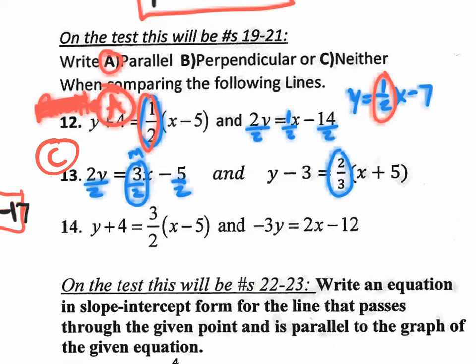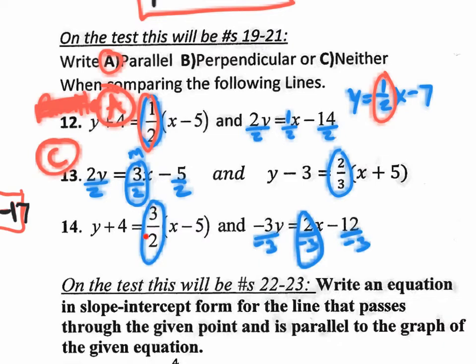For the last one, the slope is 3/2. Divide by -3 to get the second equation's slope, which is -2/3. That is the opposite reciprocal of 3/2 — it changes sign and flips — so this one is perpendicular. Question 14 is answer B, perpendicular.